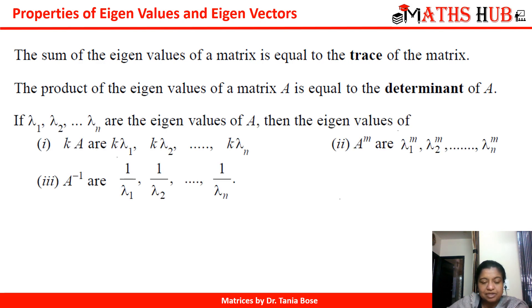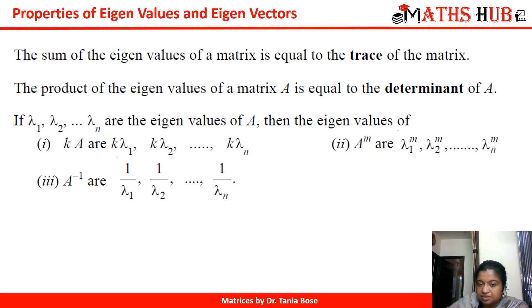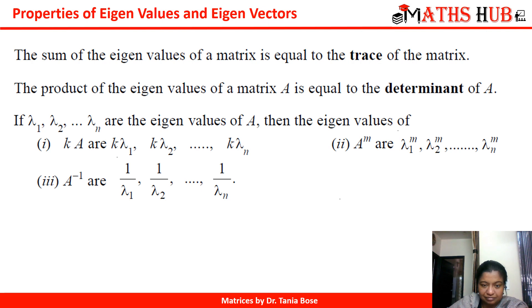If lambda 1, lambda 2, ..., lambda n are the eigenvalues of A, then the eigenvalues of kA — multiplying matrix A by a scalar k — will also be multiplied by that same scalar. For powers of A, the eigenvalues will be lambda 1^m, lambda 2^m, and so on. And for the inverse matrix A inverse, you simply invert the eigenvalues: 1/lambda 1, 1/lambda 2, and so on.